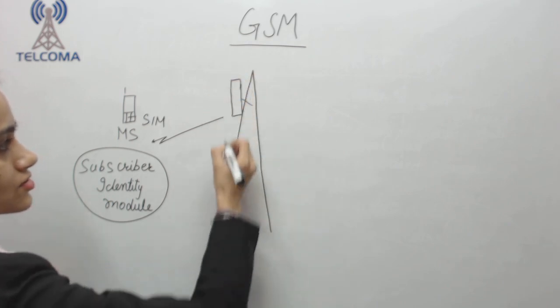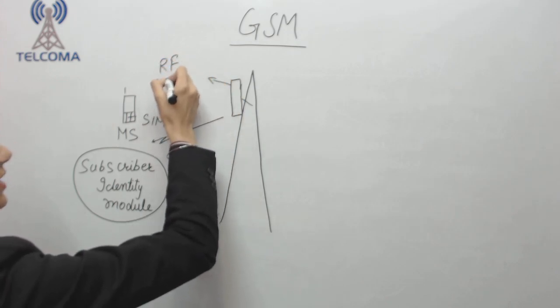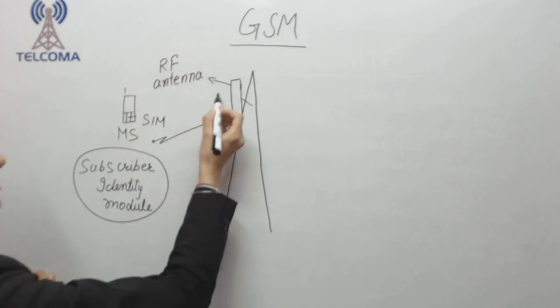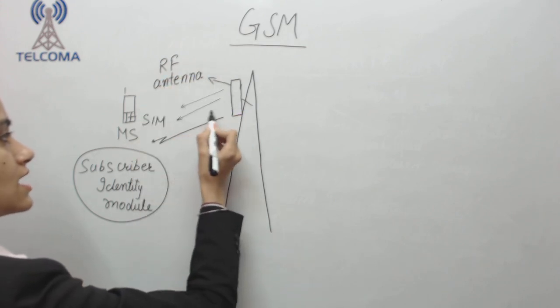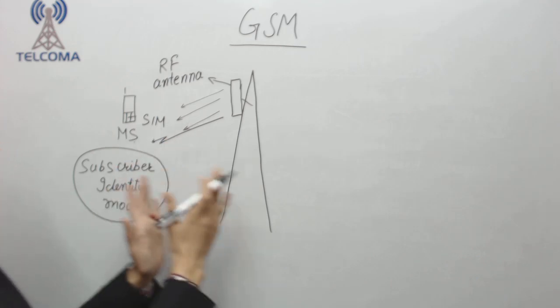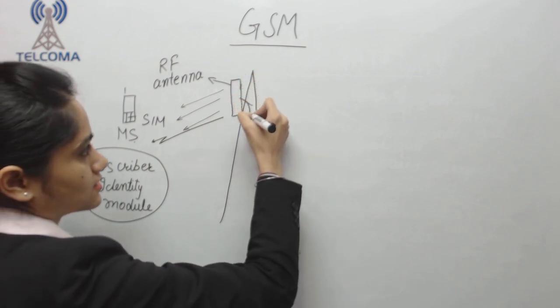This antenna is an RF antenna, where RF stands for radio frequency antenna. That means it emits various radio frequencies and the mobile station will catch these radio frequencies so that it can attach to the network.